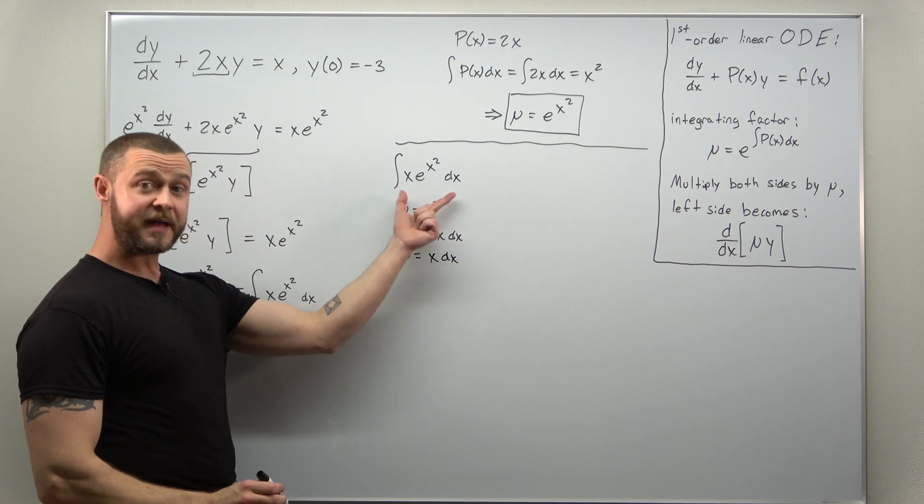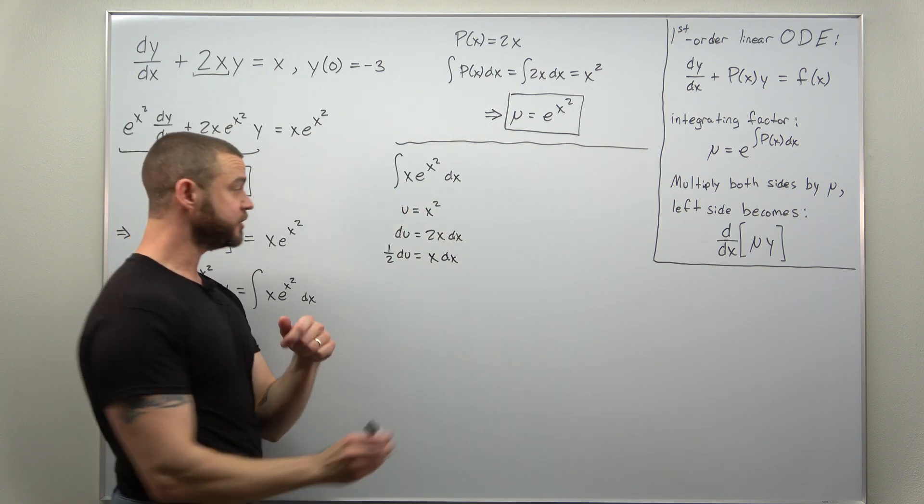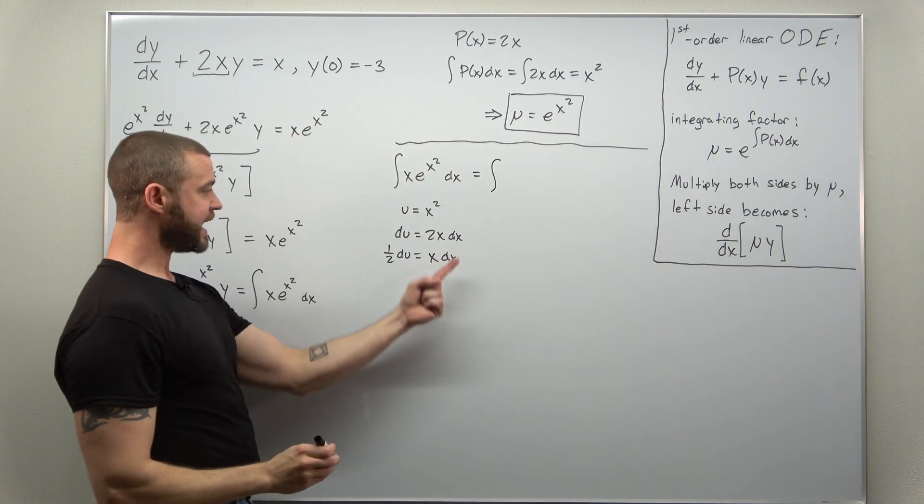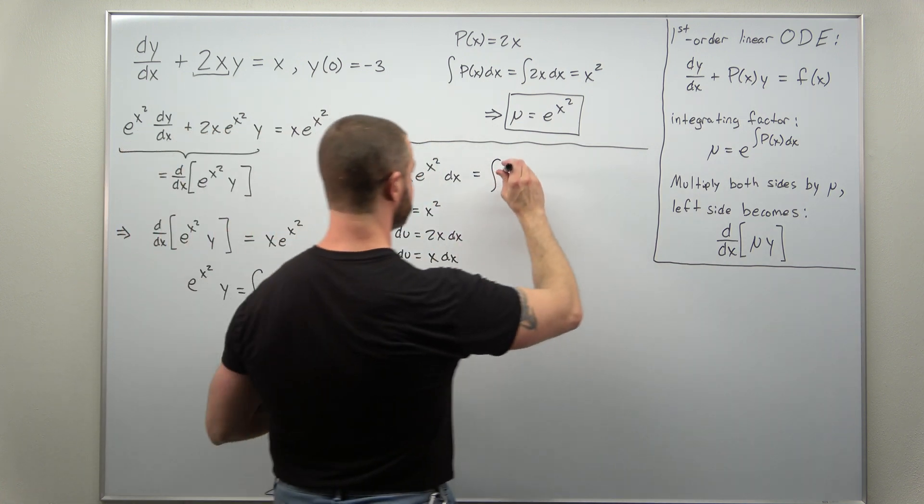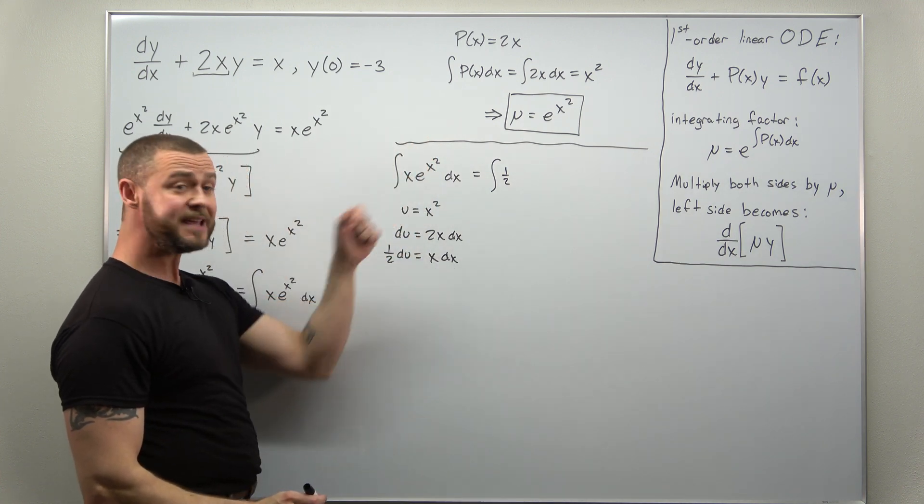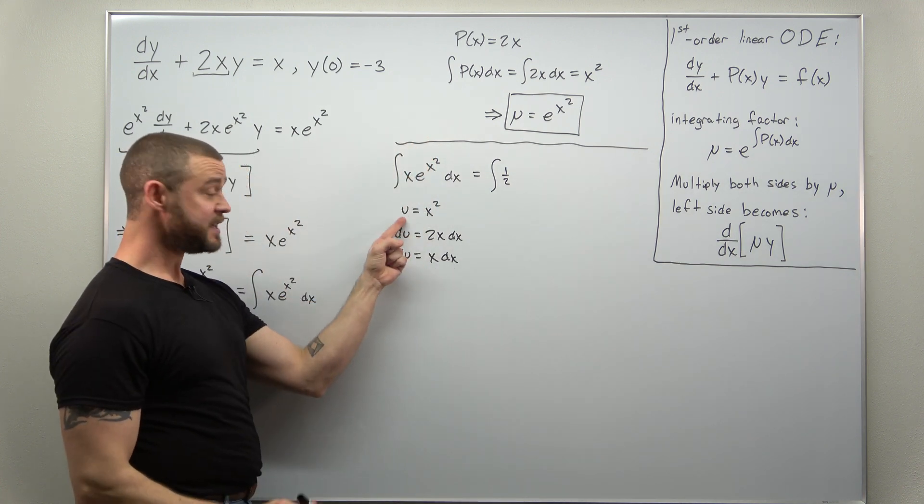And now we can convert our integral from x to a simpler integral in terms of u. So x dx, that's going to become one-half. The differential is now du, and e to the x squared, that becomes e to the u.